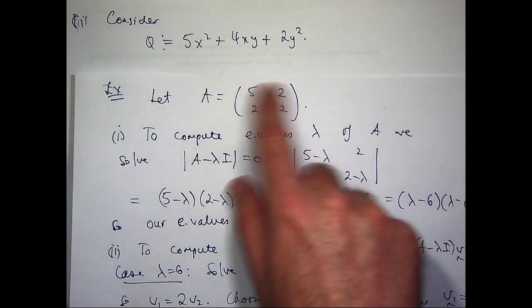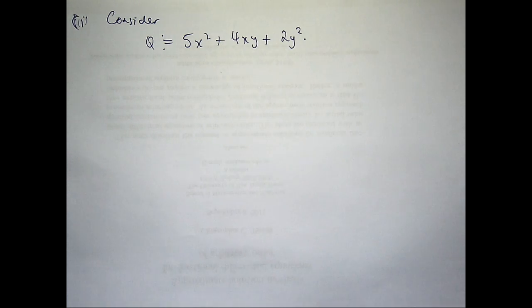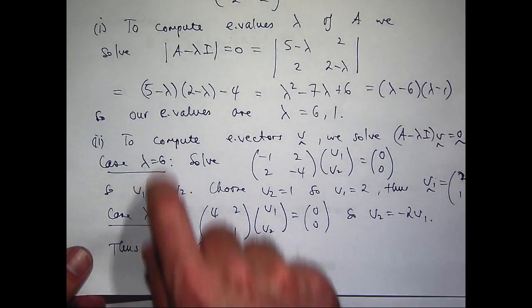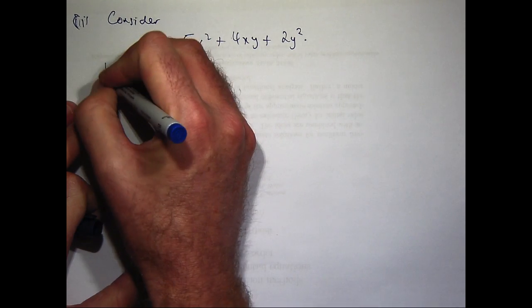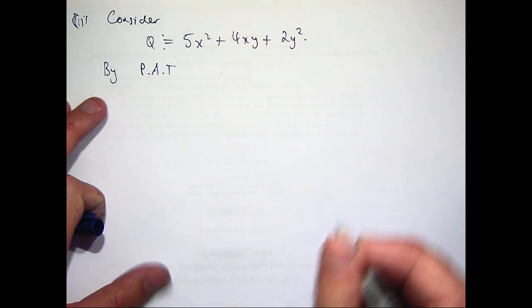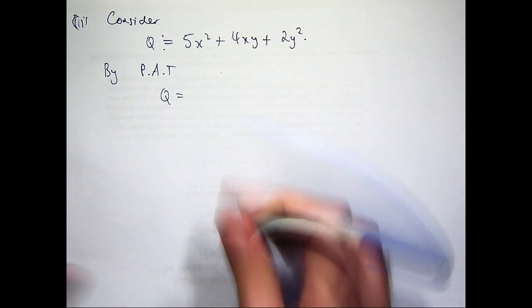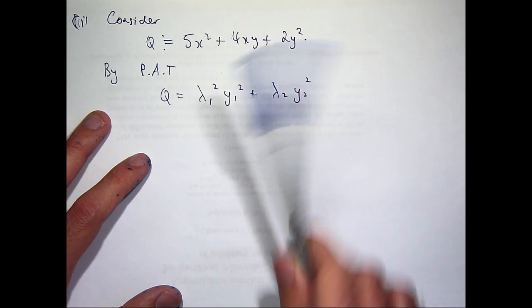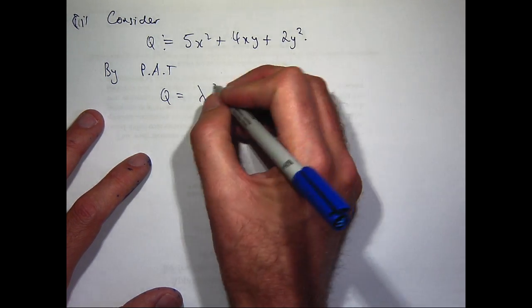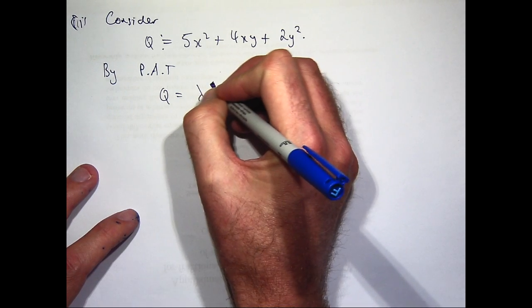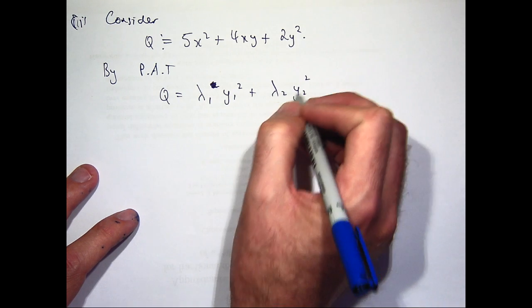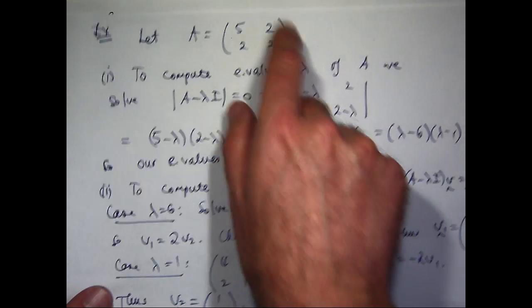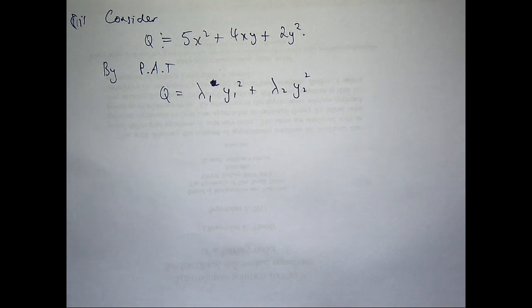Now, because this matrix is symmetric, what I can do is change the variables and write Q as the sum of squares. Now the coefficients for those squares are just the eigenvalues. So by the principal axes theorem, I can write this quadratic form in this... Let me adjust that, so that's lambda 1 times y1 squared plus lambda 2 times y2 squared. So I can write Q in this form, where lambda 1 and lambda 2 are the eigenvalues of this particular matrix. And y1 and y2 are the new set of variables.